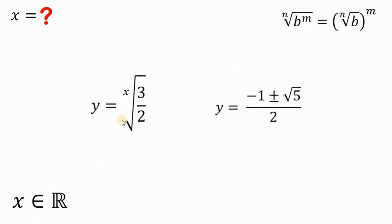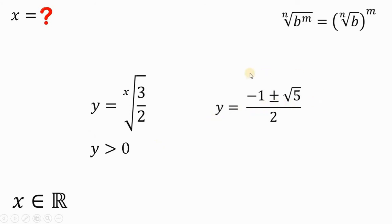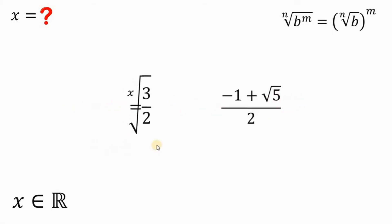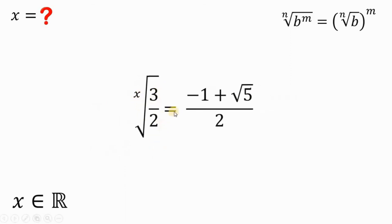Take note that y is also equal to x root of 3 over 2, and x is a real number. Therefore, the value of y given this equivalent x root of 3 over 2 must be strictly greater than 0. So we can exclude the negative value for y. Thus, y must be equal to negative 1 plus square root of 5, over 2. Now we have two different expressions for y — let's equate them: x root of 3 over 2 equals negative 1 plus square root of 5, over 2.